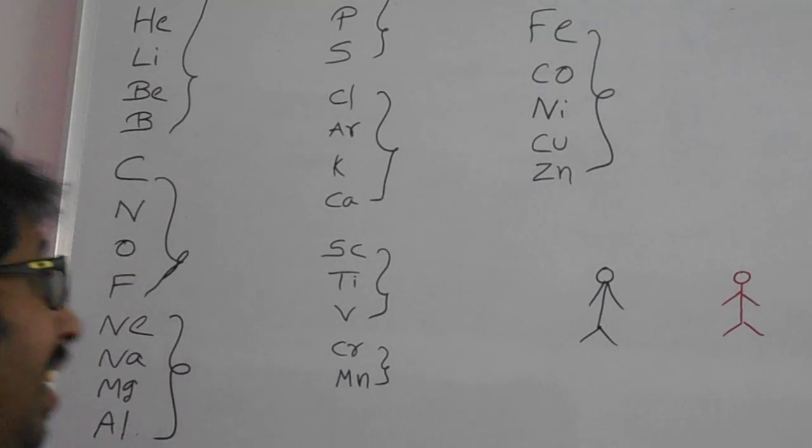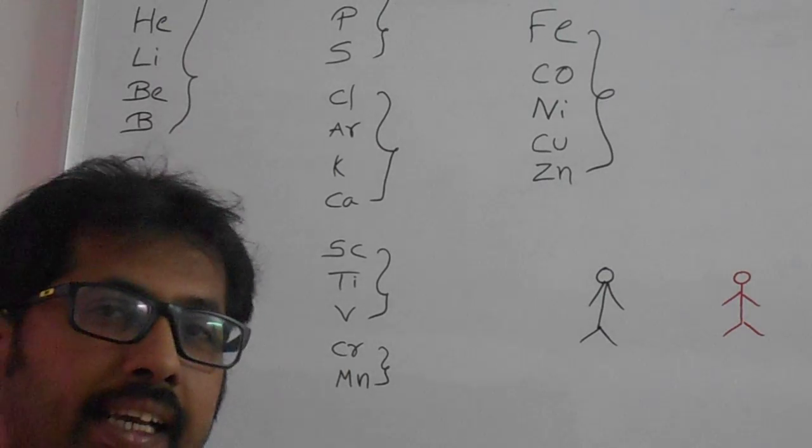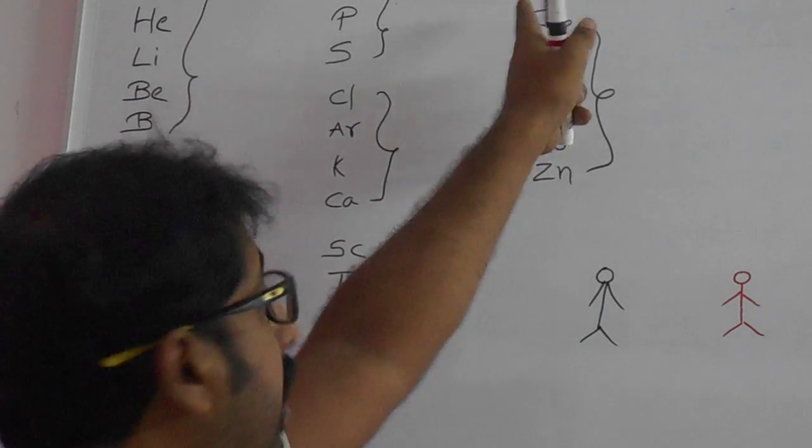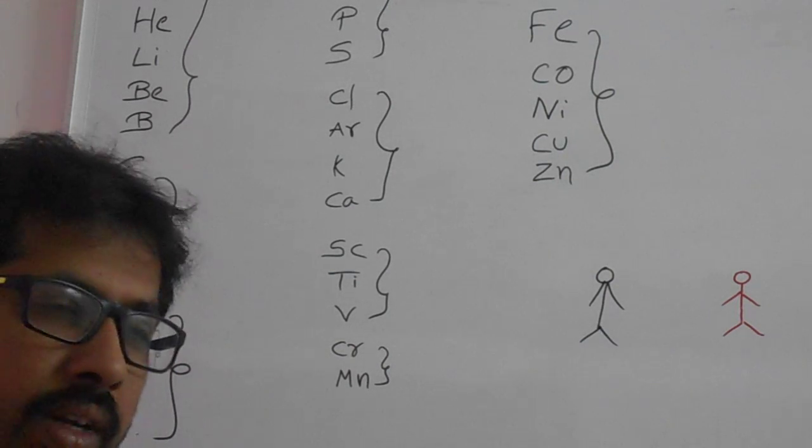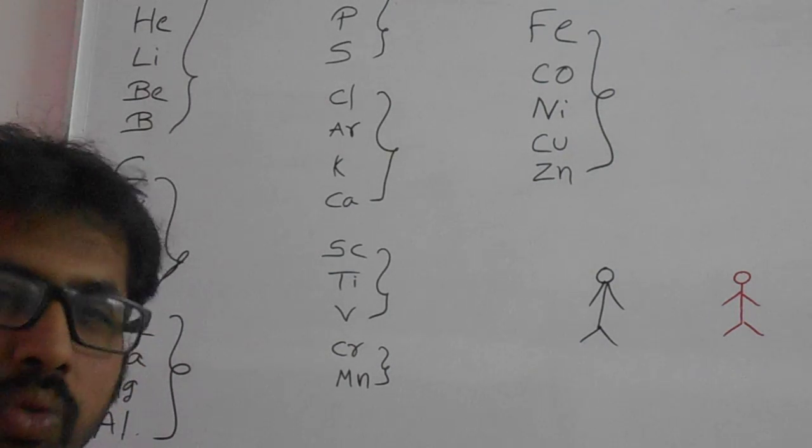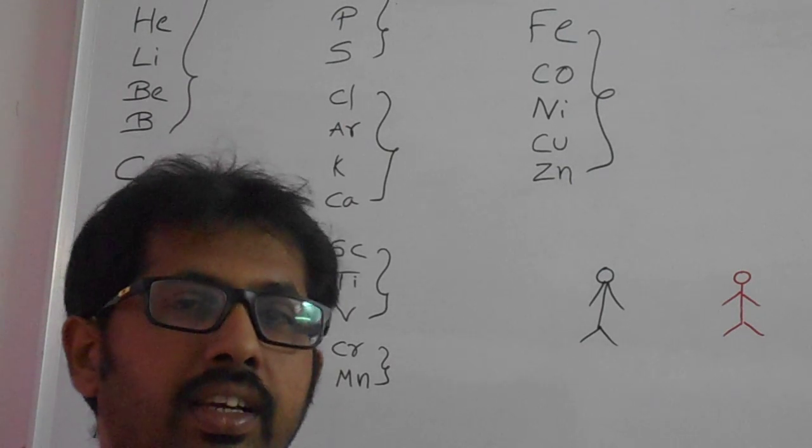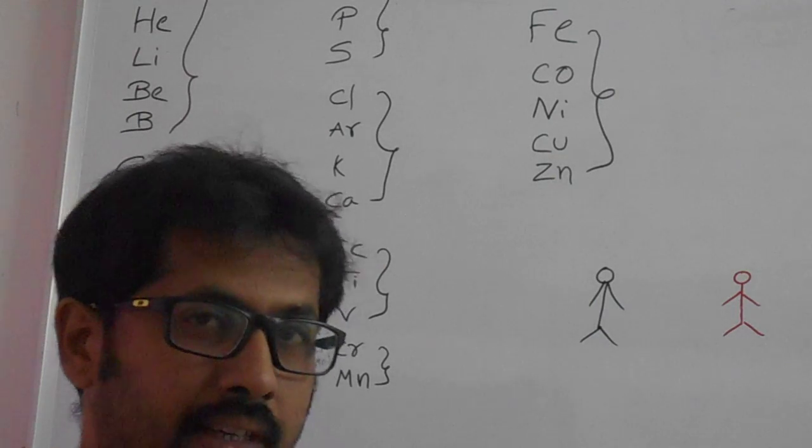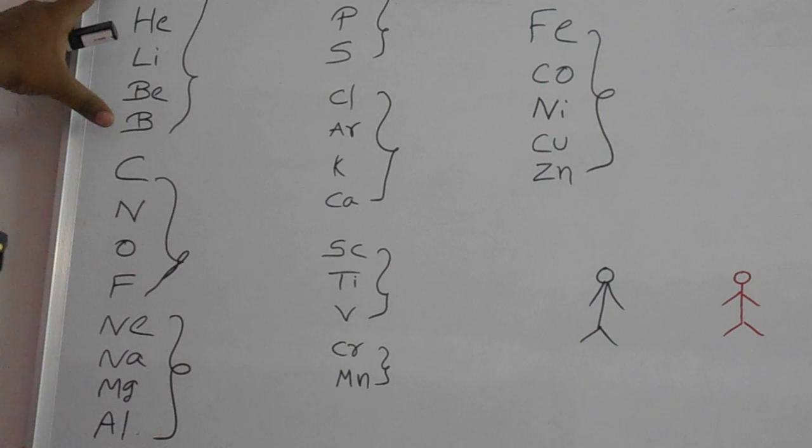Hello friends, today I am going to explain how to remember 30 elements in the modern periodic table. These 30 elements are very important from 6th class to 12th class. If you know these 30 elements, chemistry will be easy. We have to remember the atomic numbers, so I made a classification like this: 30 minutes.